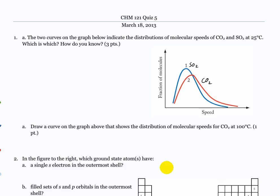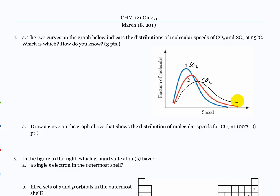If we draw a third curve showing the distribution of molecular speeds for CO₂ at 100 degrees C, how would this change? The peak wouldn't be higher because you still have a fraction of molecules, but it would be more skewed to the faster speed because the molecules would be moving faster at higher temperature. So it would look like this — something like that. Because CO₂ is number two, so it's going to be faster and more spread out, therefore the peak is going to be lower than number two.